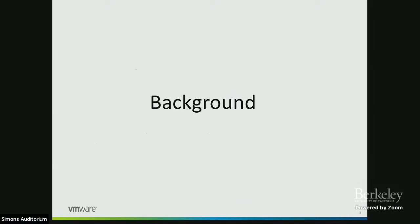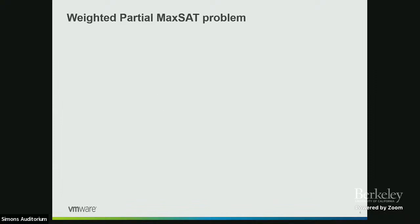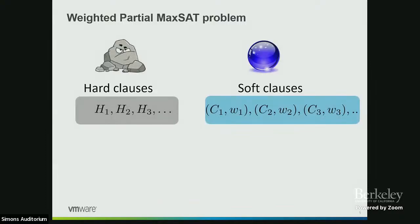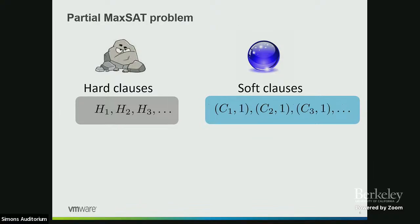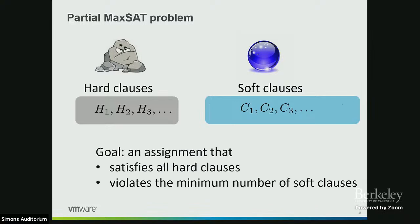Starting with some background — there have already been a few talks on MaxSAT, so very briefly: the most general formulation is the weighted partial MaxSAT problem, where we have hard clauses that must be satisfied, and soft clauses c1 to cn that we can violate, paying a cost each time. We will focus on the special case where all weights are one — partial MaxSAT — so we simply count the number of violated clauses. The goal is to find an assignment that satisfies all hard clauses while minimizing the number of violated soft clauses.